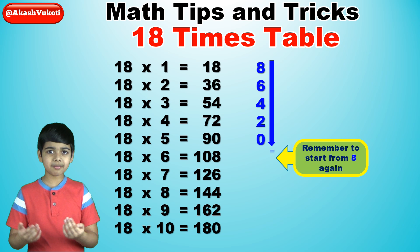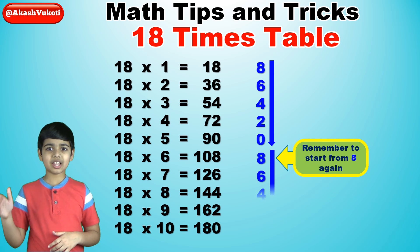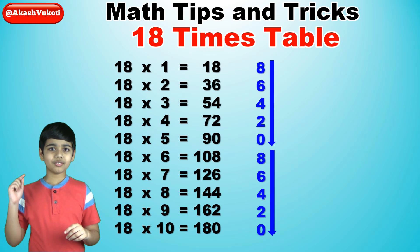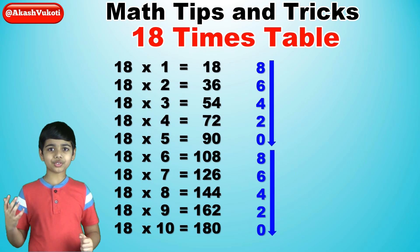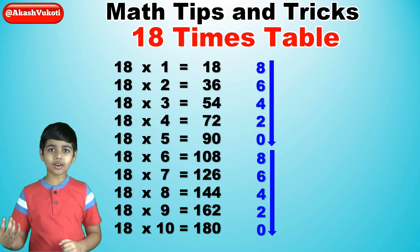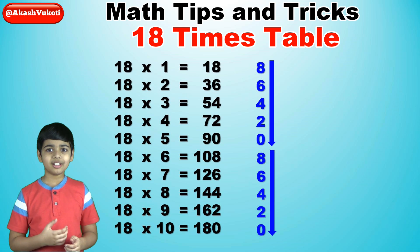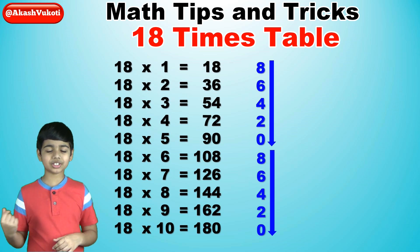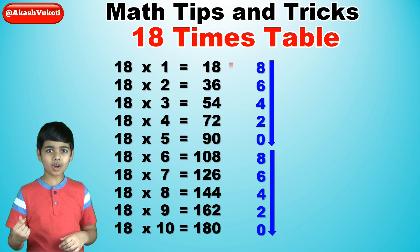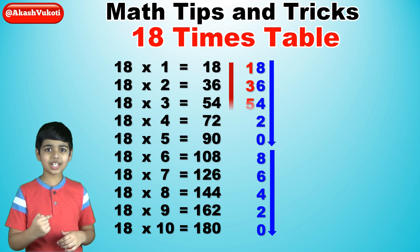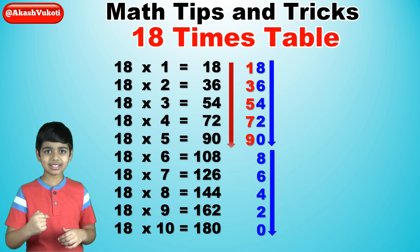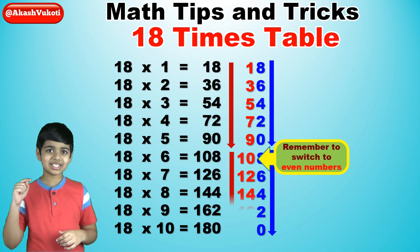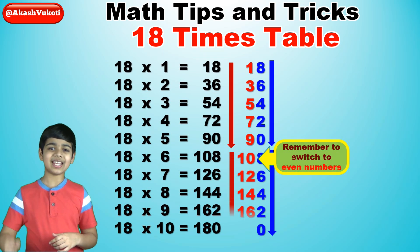Do it again: 8, 6, 4, 2, 0. Next, for the tens digits, we'll just write the odd numbers from 1 to 9 and then the even numbers from 10 to 18. So: 1, 3, 5, 7, 9, and then 10, 12, 14, 16, 18.